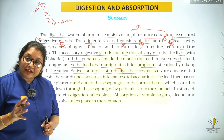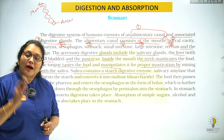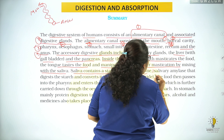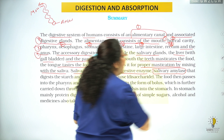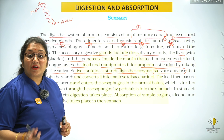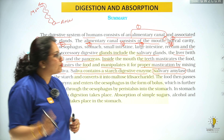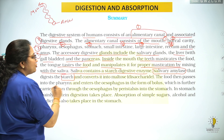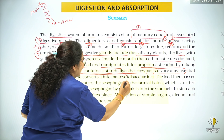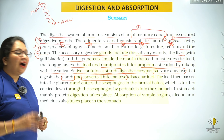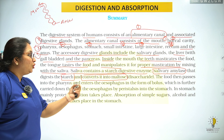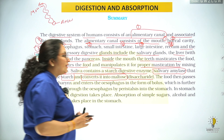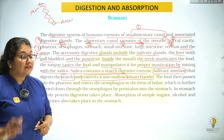Buccal chamber mein saliva ki sahayata se salivary amylase carbohydrate ka digestion kerta hai. The enzyme is salivary amylase, also called ptyalin, which works at pH 6.8. It converts starch into maltose. Maltose ek type ka disaccharide hai.